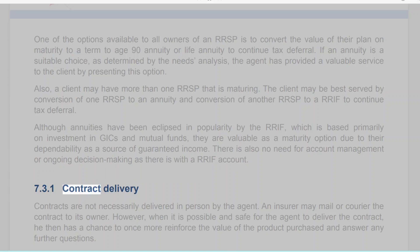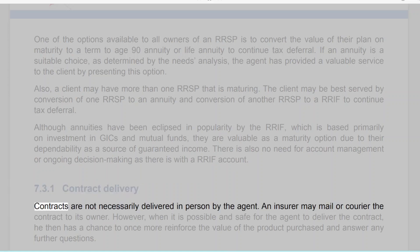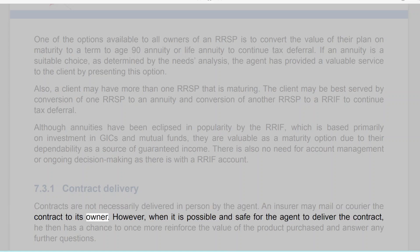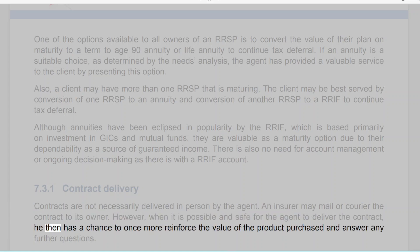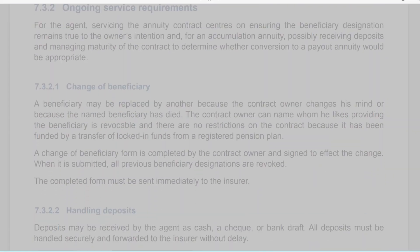Section 7.3.1: Contract delivery. Contracts are not necessarily delivered in person by the agent — an insurer may mail or courier the contract to its owner. However, when it is possible and safe for the agent to deliver the contract in person, he then has a chance to reinforce the value of the product purchased and answer any further questions.